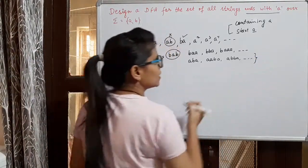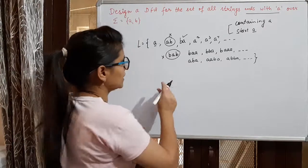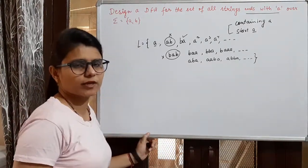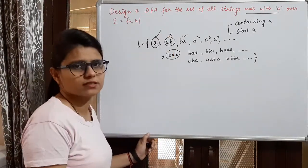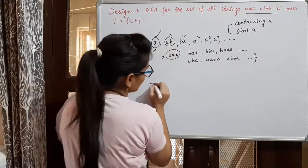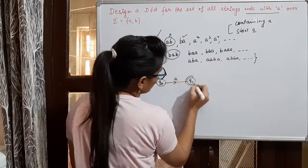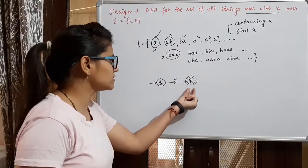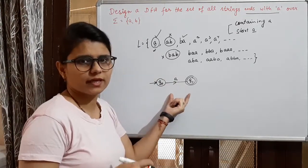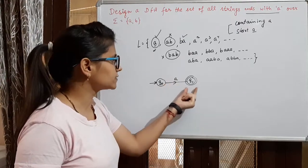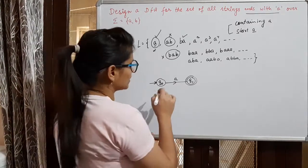So there are infinitely many strings generated in this particular language. Now we start making the DFA. The minimum string is A, so we move to Q1 state. We make Q1 the final state because the minimum string A, which is the smallest string, must be accepted by the DFA, and we hold that string at the final state.